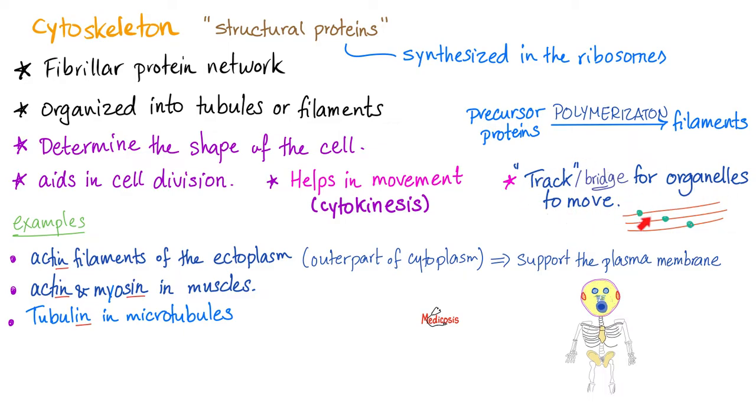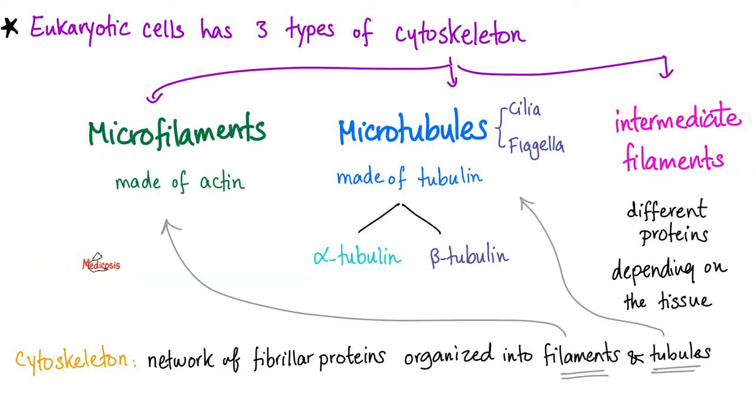As a human, you have three types of cytoskeleton: microfilaments, made of actin; microtubules, made of tubulin; and intermediate filaments, made of different proteins depending on which tissue you're talking about.